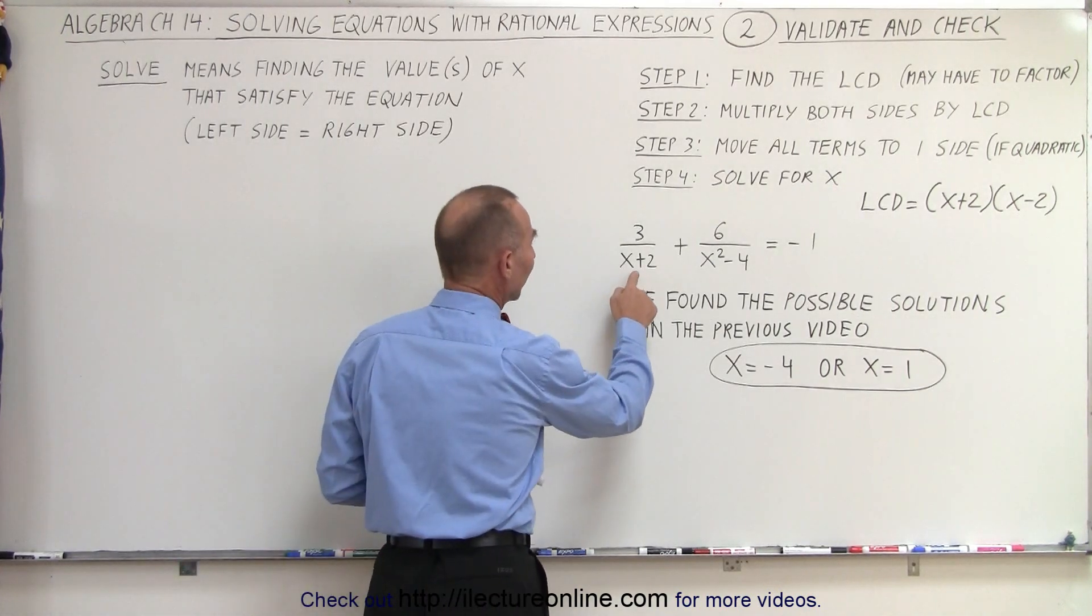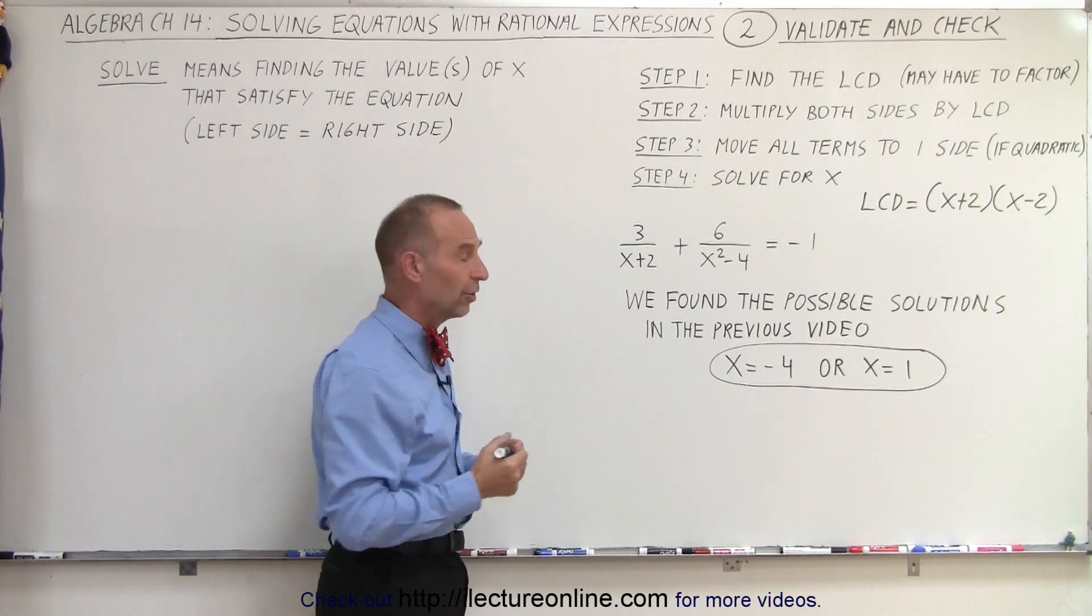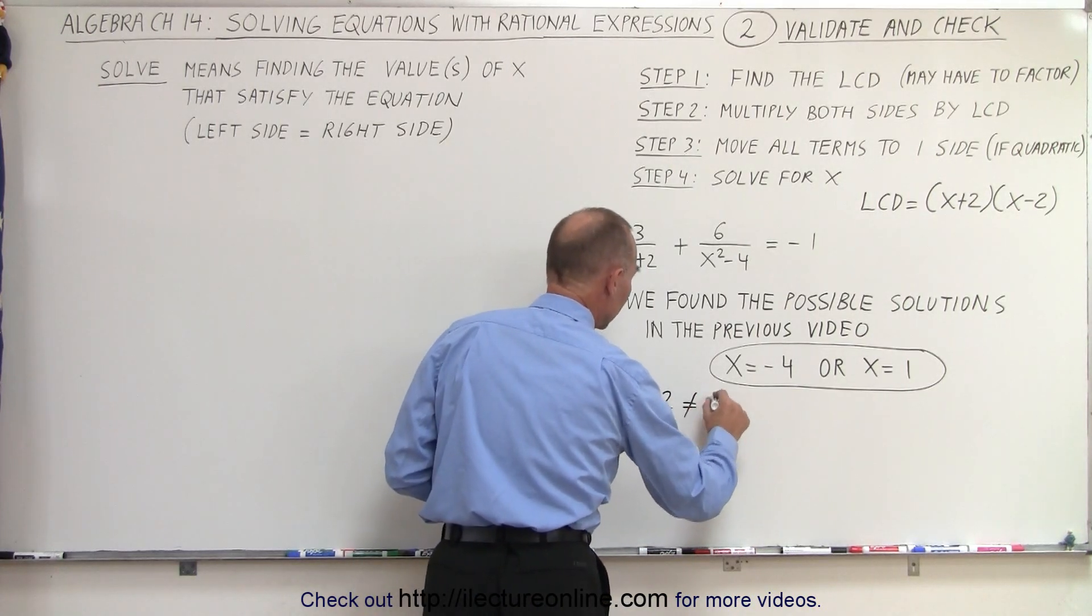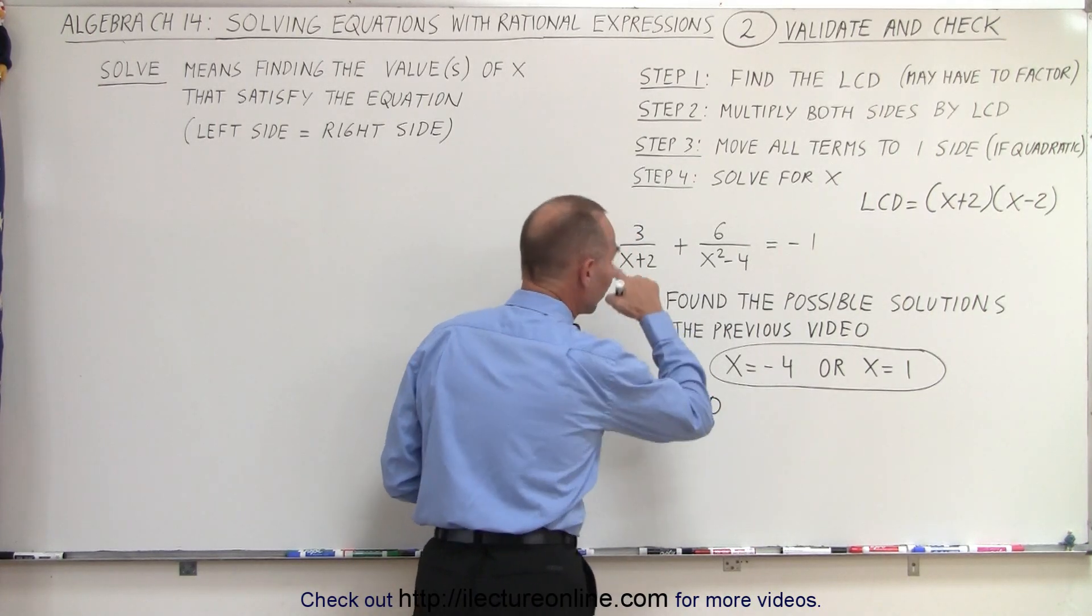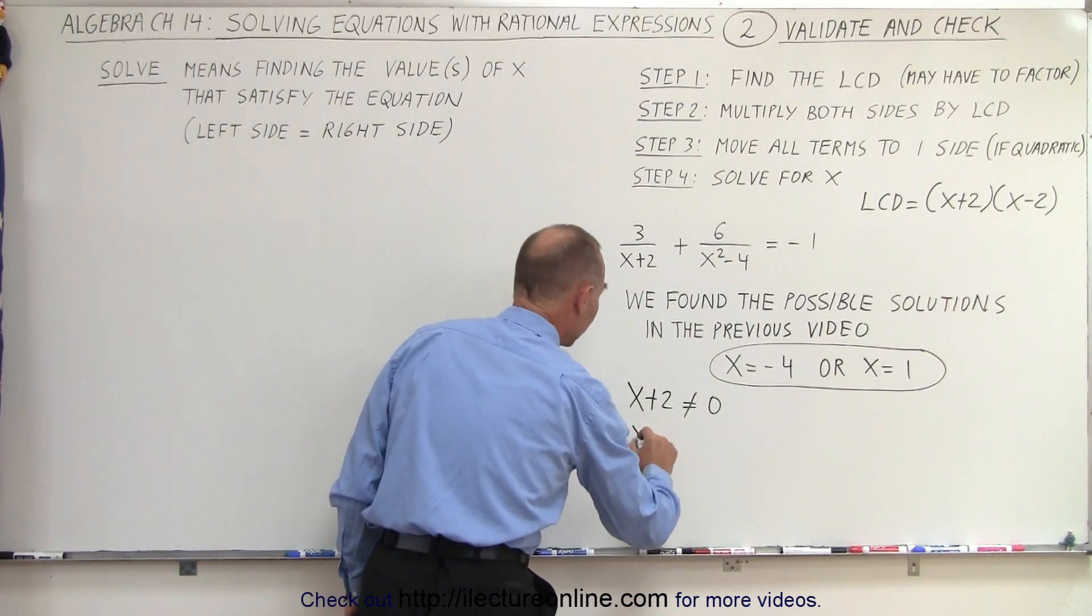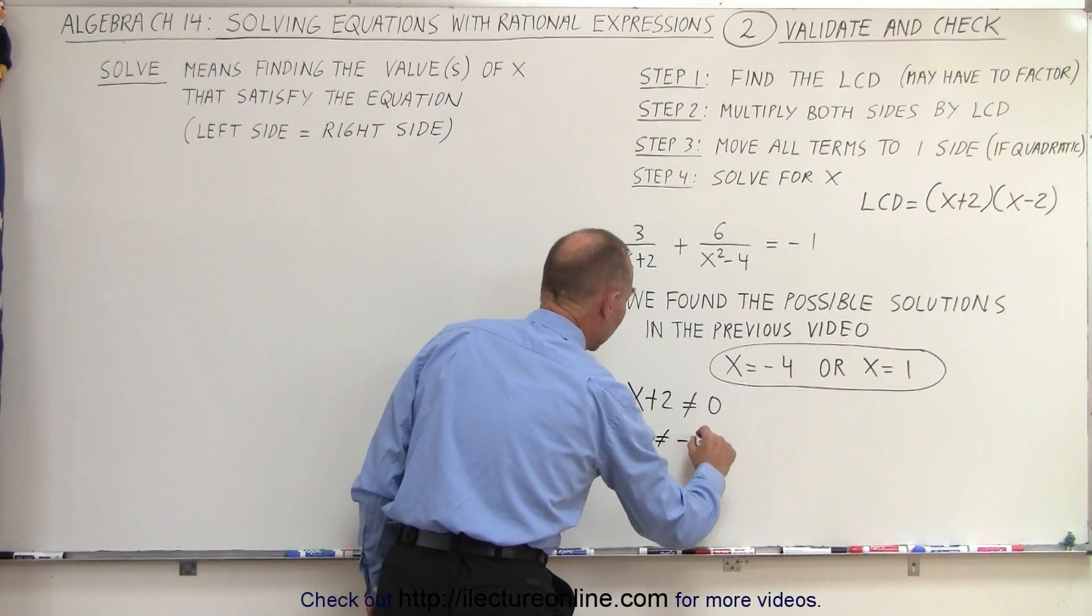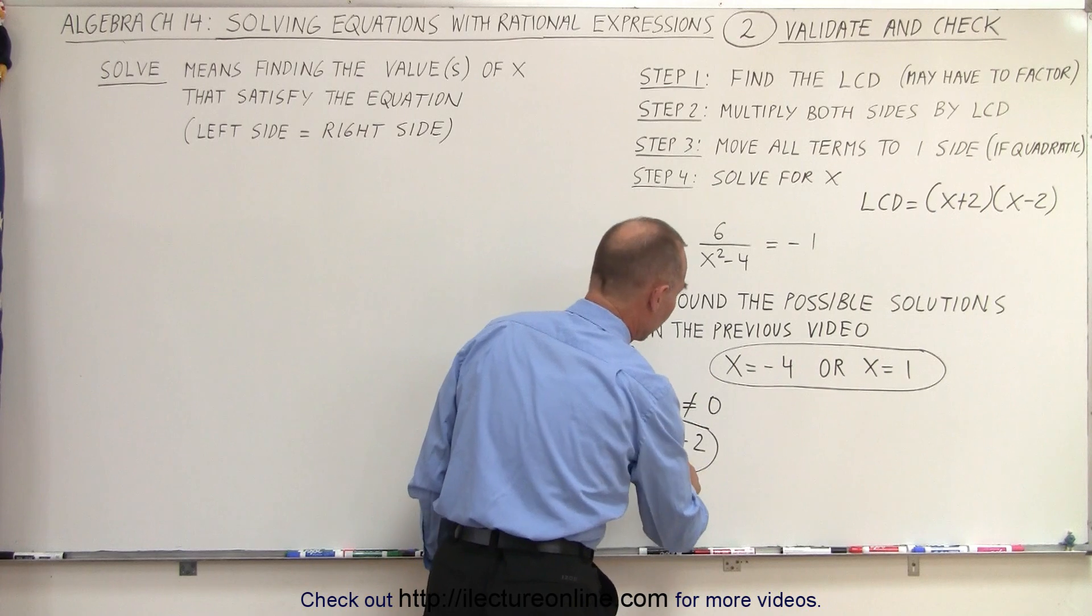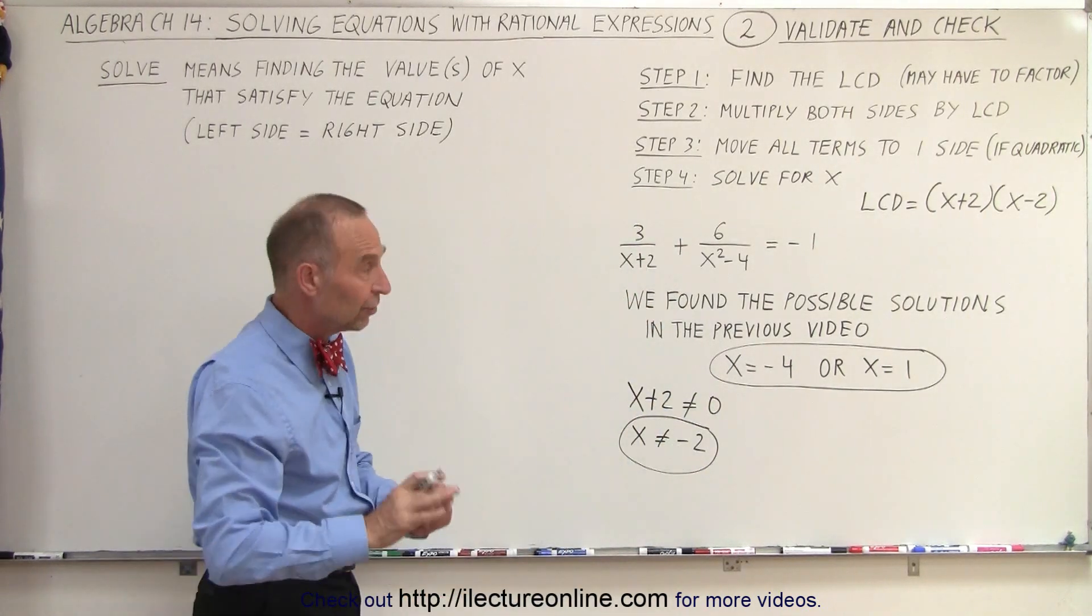We can say that x plus 2 cannot equal zero because if it's equal to zero, we have a zero denominator, which means x cannot equal negative 2. Since neither one of our solutions is negative 2, then that's not a problem.